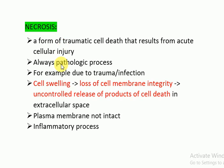The steps of apoptosis involve cellular shrinkage, then blebbing, formation of apoptotic bodies, and phagocytosis — all without spillage of contents or any inflammatory reaction. In necrosis, there is cell swelling, then loss of membrane integrity, and then uncontrolled release of cell death products into the surrounding environment, causing the inflammatory process. The plasma membrane is not intact in necrosis.